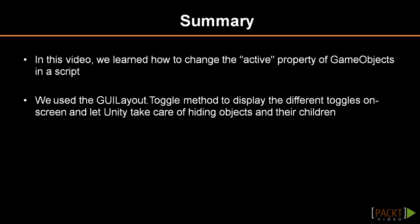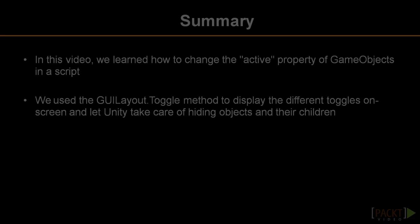In this video lesson we learned how to change the active property of game objects in a script. We used the GUILayout toggle method to display the different toggles on screen, and let Unity take care of hiding objects and their children. In the next video we will make a script to switch between different viewpoints.